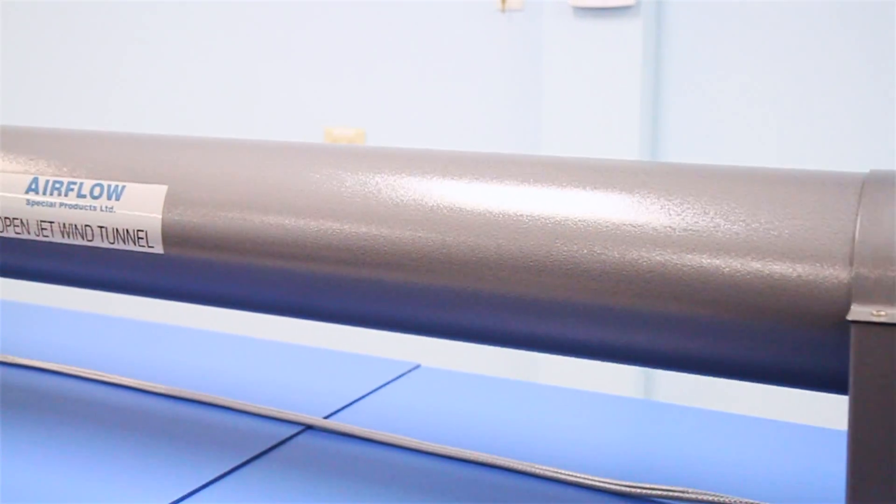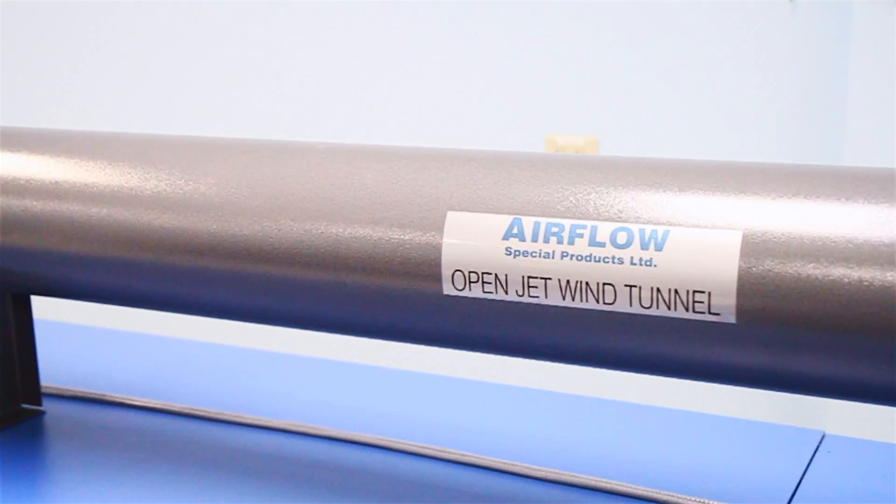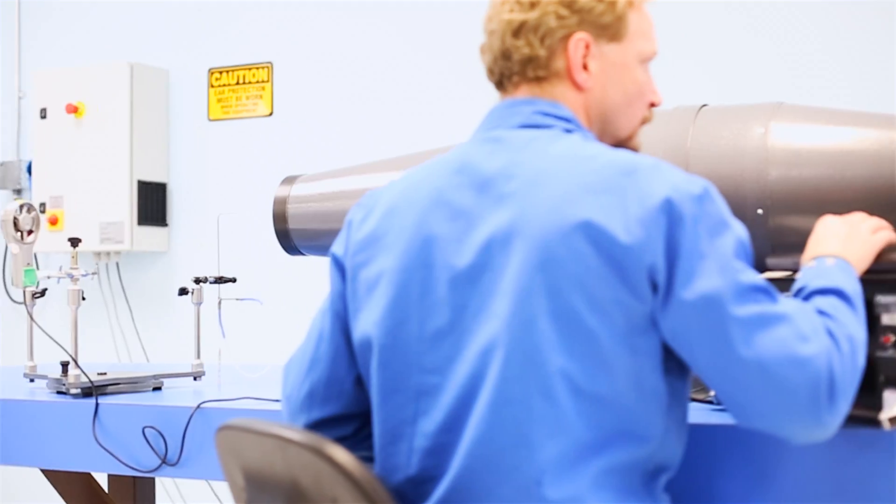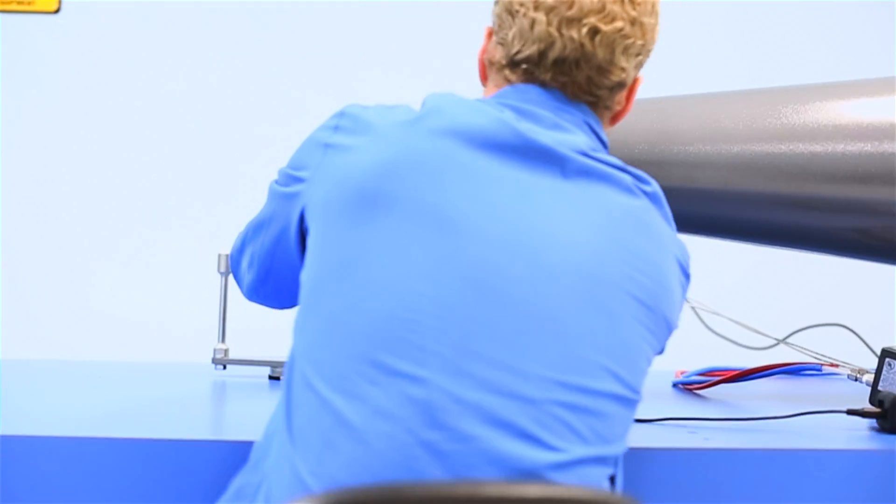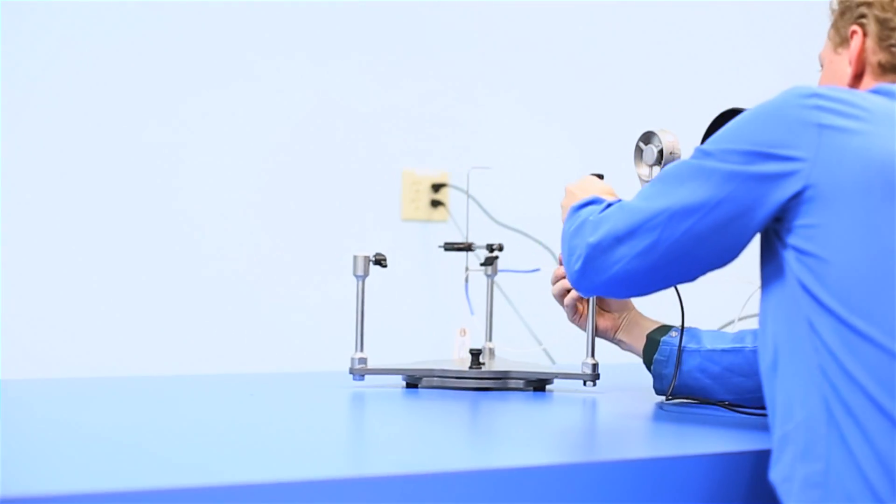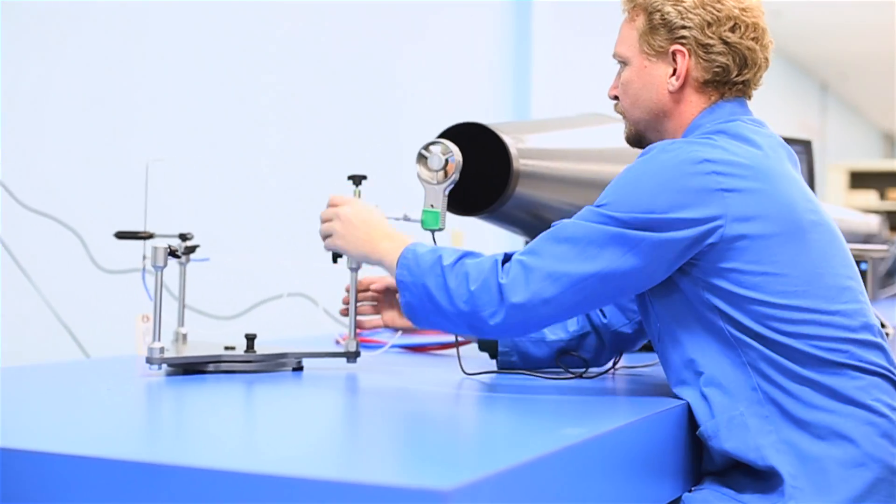Our Airflow Open Jet Wind Tunnel has a range up to 6,000 feet per minute, with a standalone accuracy of plus or minus 3% of reading. This wind tunnel is designed for large rotary vane type or ultrasonic anemometers.